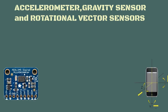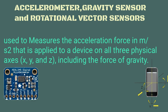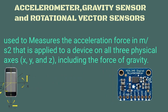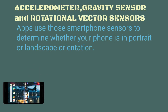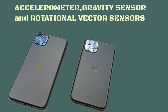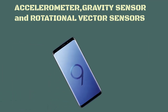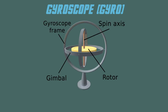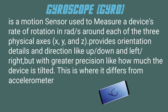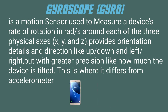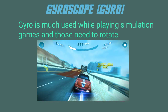Accelerometer, gravity sensor and rotational vector sensors are motion sensors used to measure the acceleration force in m/s² that is applied to a device on all three physical axes — X, Y and Z — including the force of gravity. Apps use these sensors to determine whether your phone is in portrait or landscape orientation, and can tell if your phone's screen is facing upward or downward. The accelerometer can also detect how fast your phone is moving in any linear direction. Gyroscope is a motion sensor used to measure a device's rate of rotation in rad/s around each of the three physical axes — X, Y and Z. It provides orientation details in directions like up, down, left and right, but with greater precision — like how much the device is tilted. This is where it differs from the accelerometer. The gyroscope is much used while playing simulation games and those that need rotation.